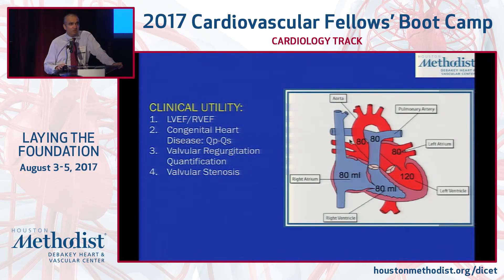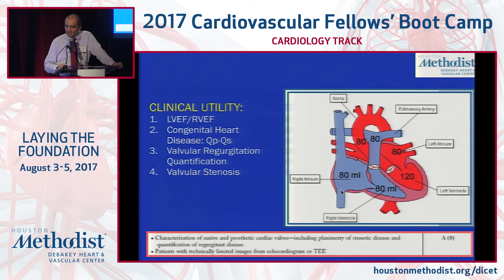This methodology can also be used in congenital heart disease patients where we're trying to determine the magnitude of the shunt between the right ventricle and left ventricle, or at the aortic level. You can use this to compute aortic and pulmonic flow fractions. The appropriate use criteria indicate this is a very highly appropriate reason to use CMR when assessing QP/QS, as well as assessment of native or prosthetic cardiac valves where you're trying to determine the severity of regurgitation or stenosis and your echocardiography is suboptimal.